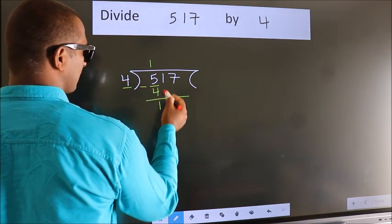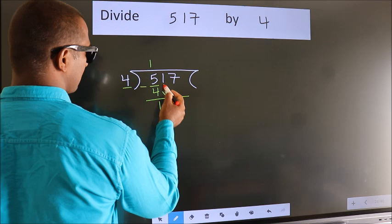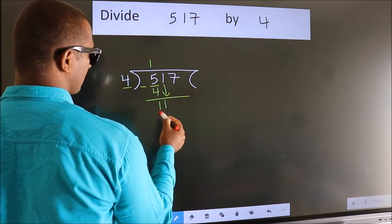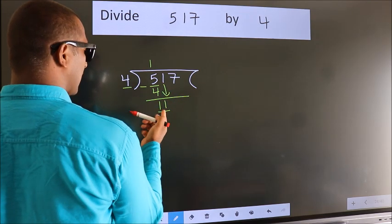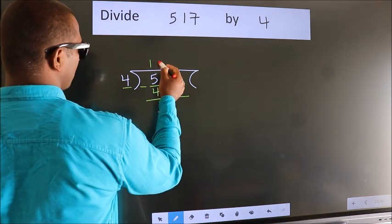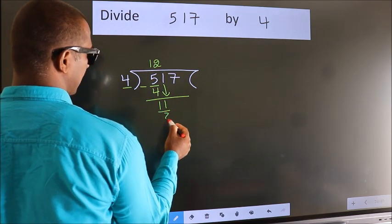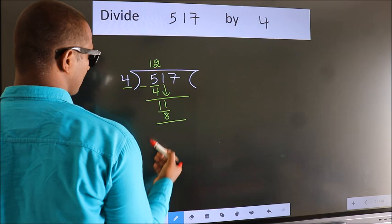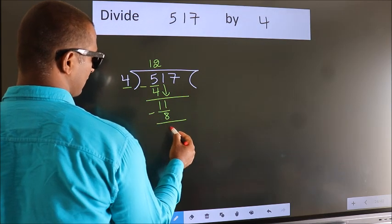After this, bring down the beside number. So, 1 down. So, 11. A number close to 11 in 4 table is 4 twos, 8. Now, we subtract. We get 3.